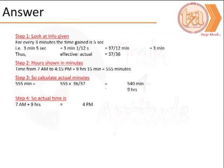We next calculate the total number of minutes between 7 am and 4:15, which comes to 555 minutes. Now 555 minutes divided by the proportion we calculated comes to 540 minutes, which is 9 hours. So 9 hours from 7 am results in 4 pm.